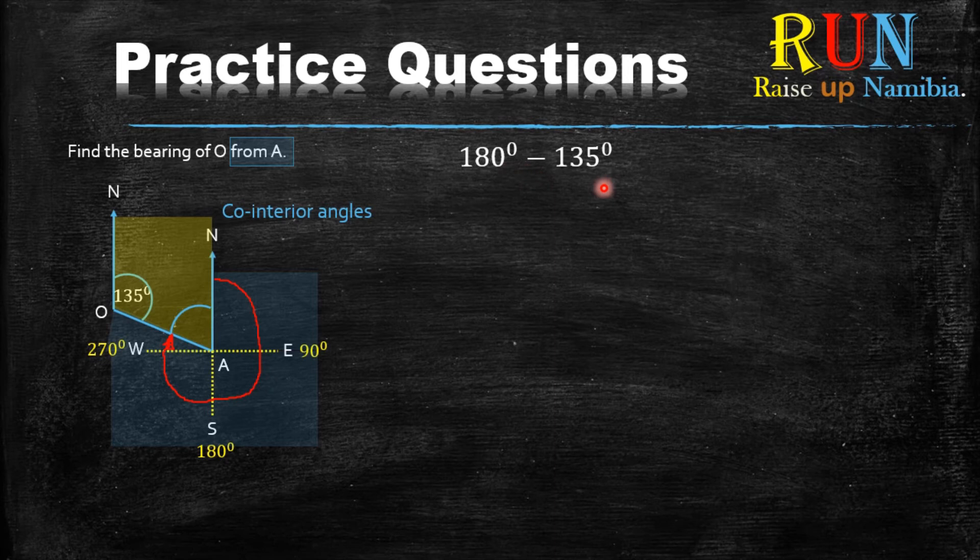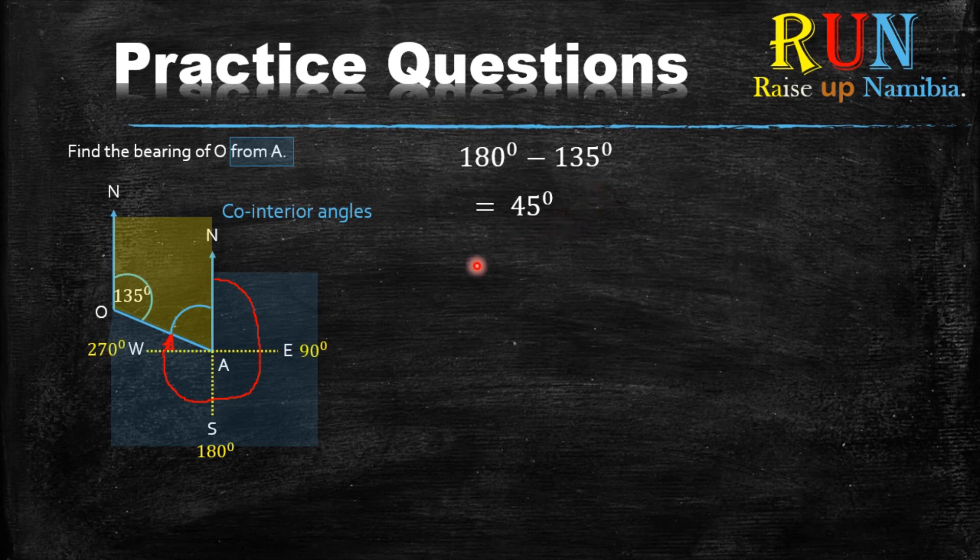In this case you are given 135 already, so you say 180 minus 135 equals 45. Then you get your answer. Now once you get your answer, it means that answer is this angle.